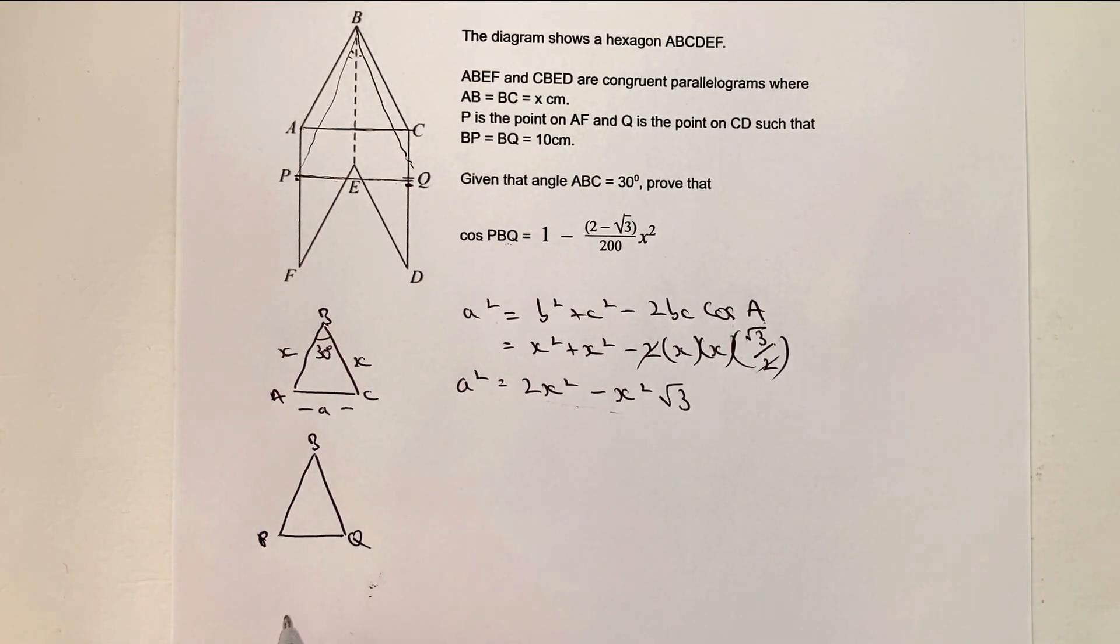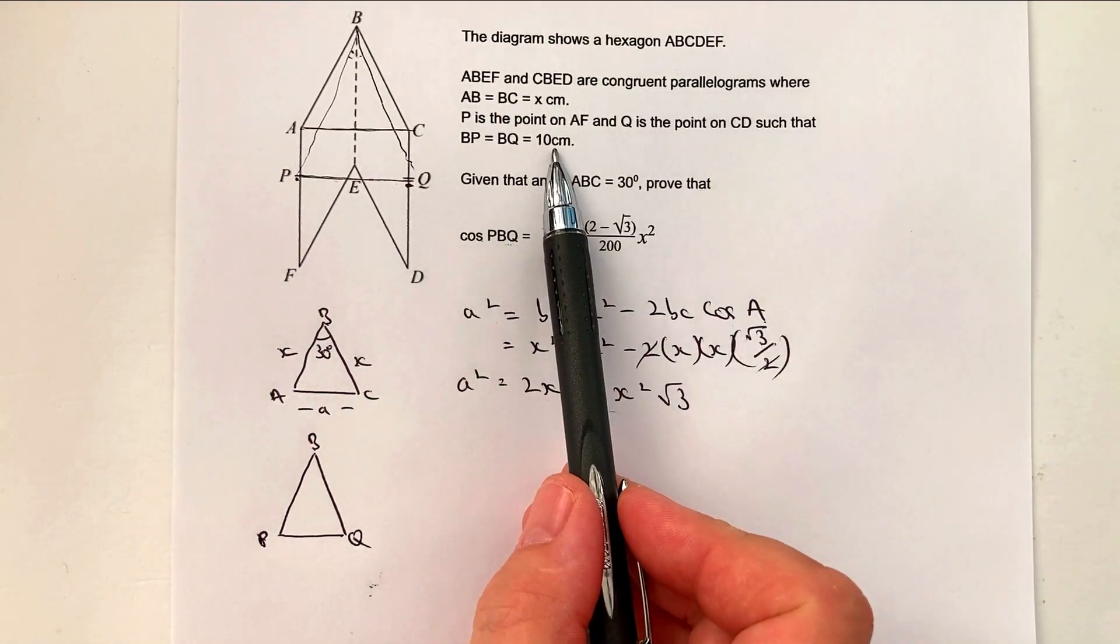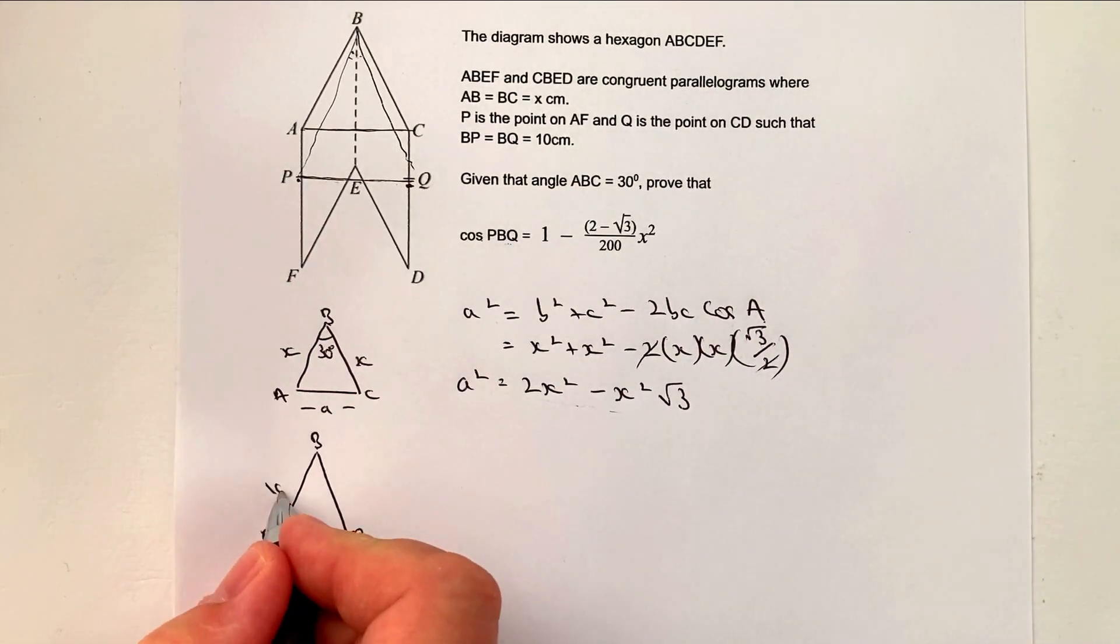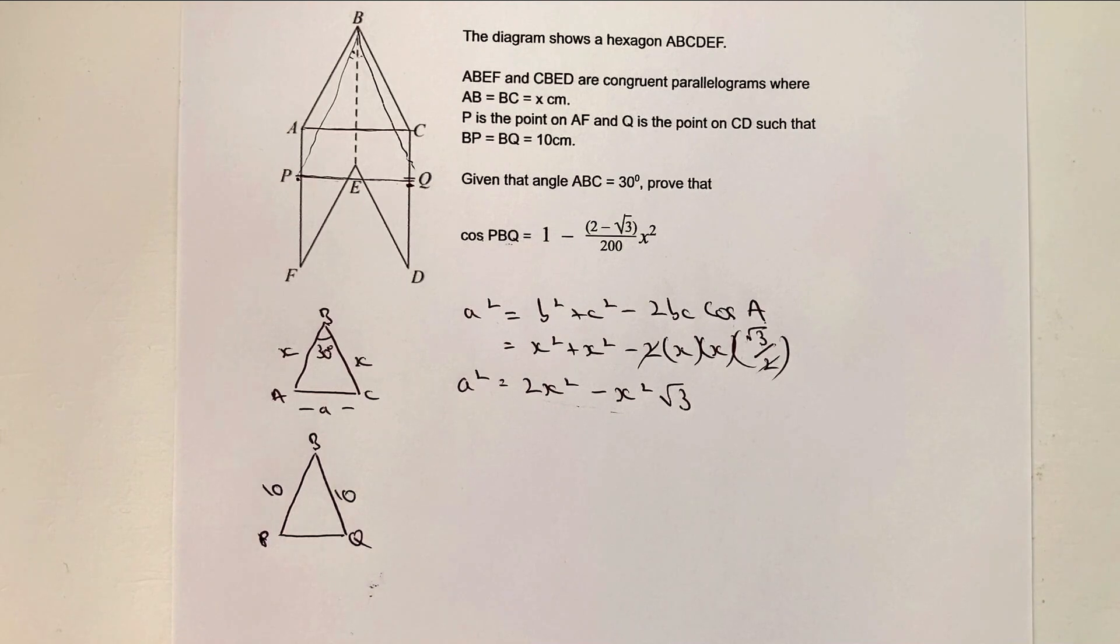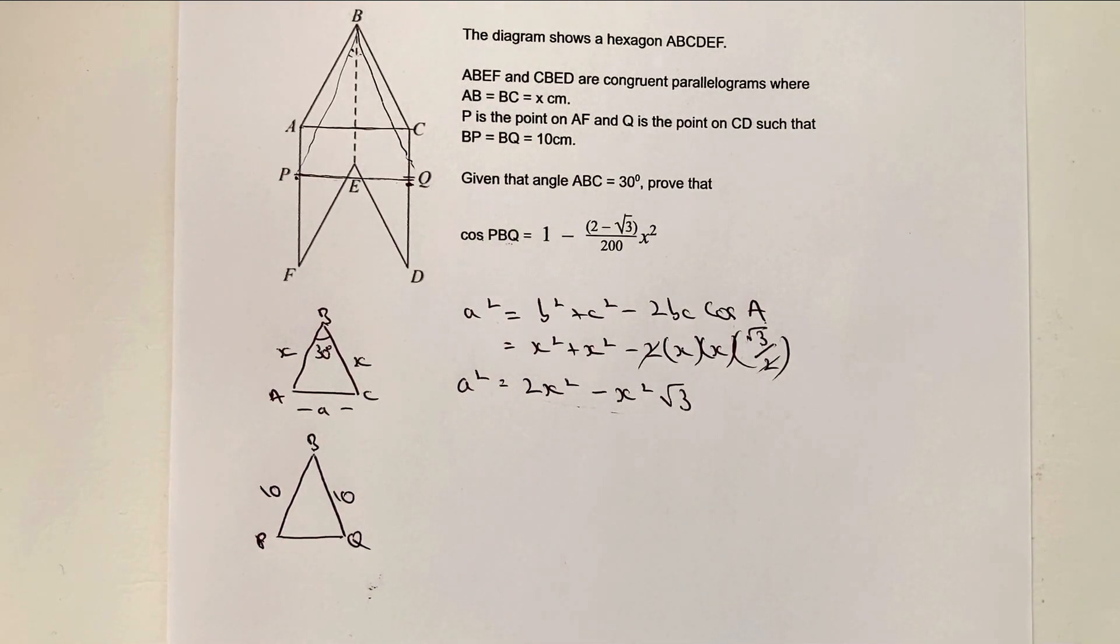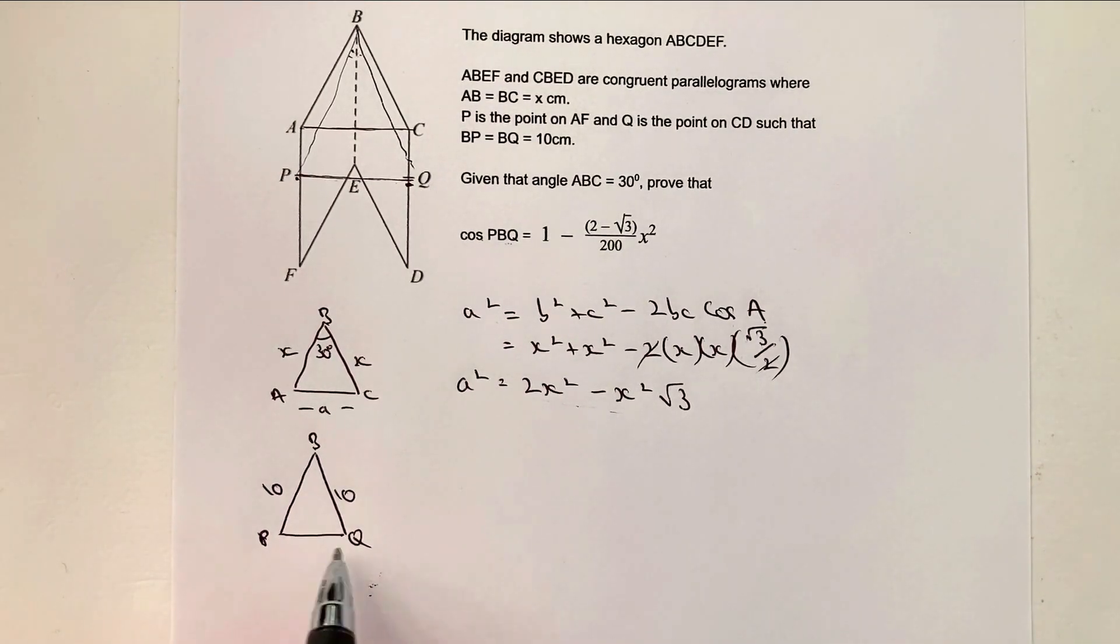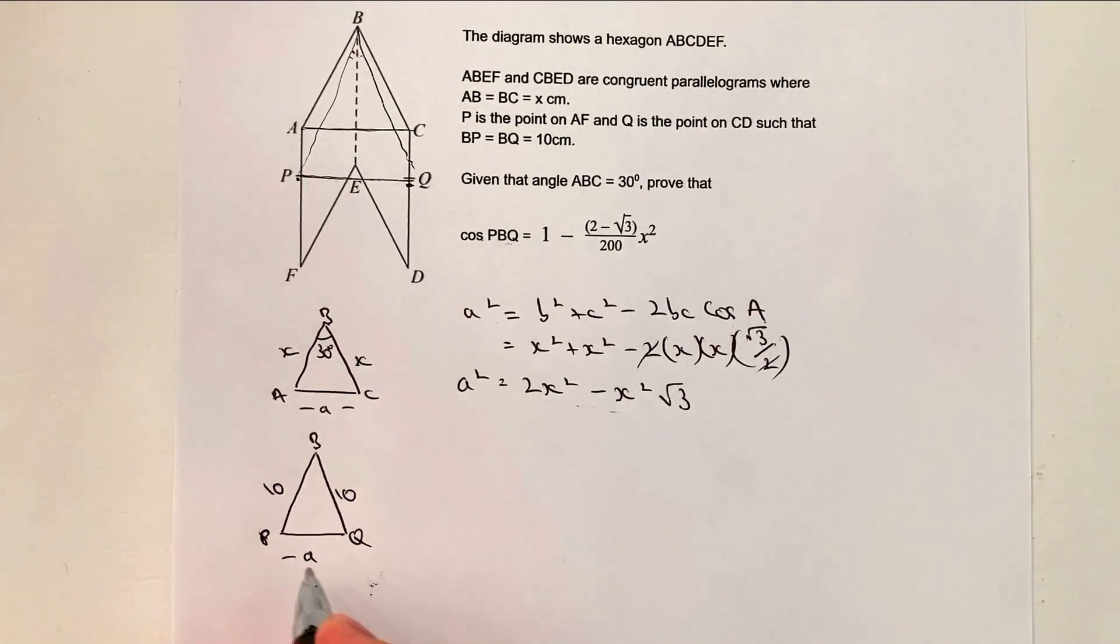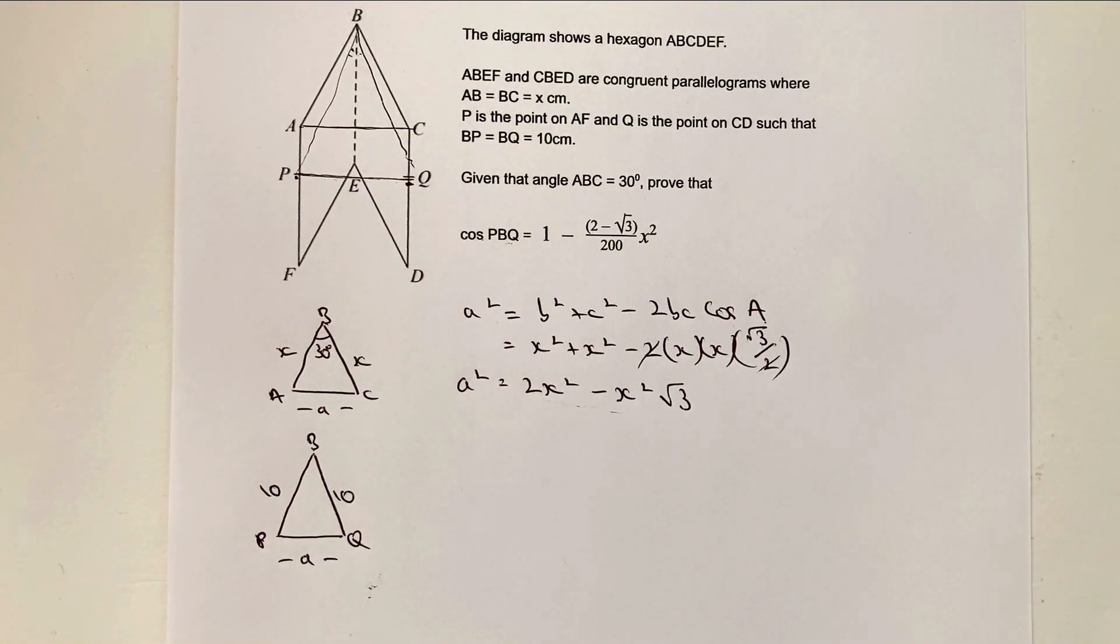So if I've got PBQ. Okay, what we're told is that P to B and B to Q is actually 10 centimeters. So I can use that bit of information. Okay, and the other thing which is our own thinking is that AC and PQ are equal to each other. So both are going to be equal to A.